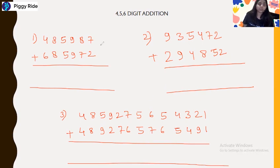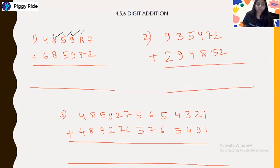Let me change the color. So firstly we will see what is the carry number and which is not the carry number. This is the carry number, this is also a carry number, this is also a carry number, and this is also a carry number, and this is not a carry number.